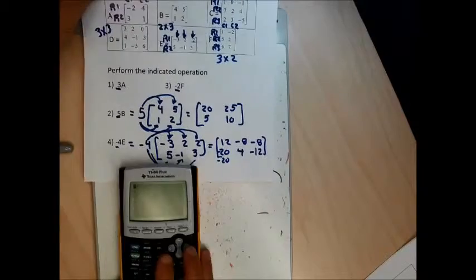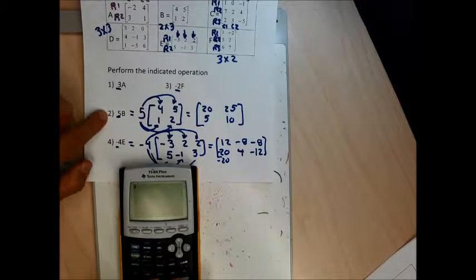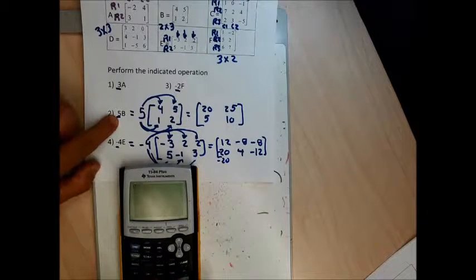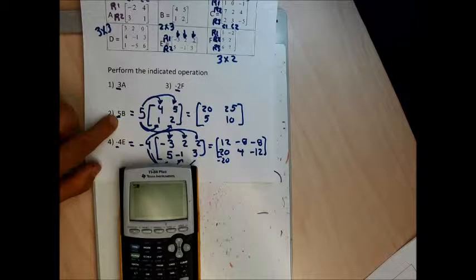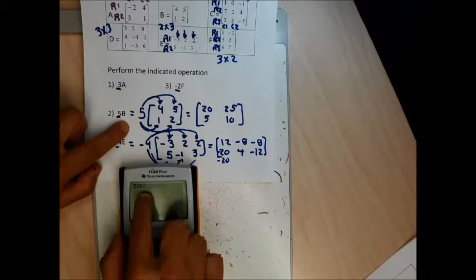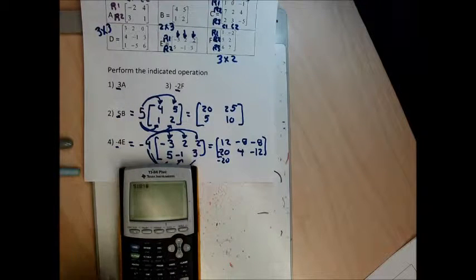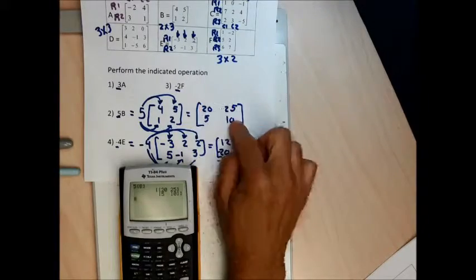Now if I wanted to do problems 2 and 4, I'm going to do these from the main screen. To do problem 2, I type the number 5, then go to matrix names — not math, not edit — go second matrix, leave the column in names, and have B highlighted. It puts a B and matrix symbol next to 5. When I hit enter, it gives me 20, 25, 5, and 10.